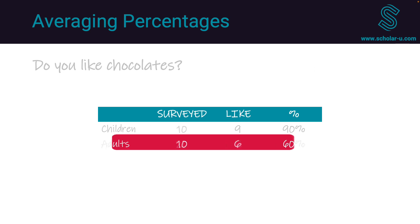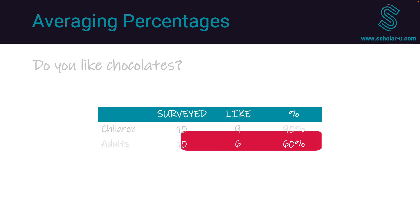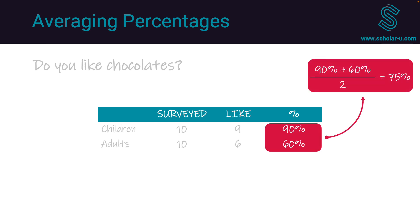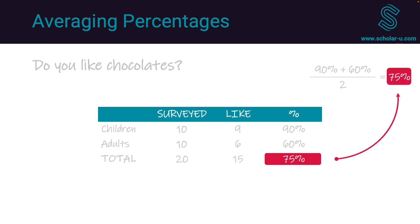However, if we instead surveyed 10 adults — the same number as the children — we can still get 6 out of 10 who like chocolate, which is still 60%. Our simple average is 75%, and when we look at the totals we also get 15 out of 20 people who like chocolate, which is 75%. In this case, averaging percentages does work.